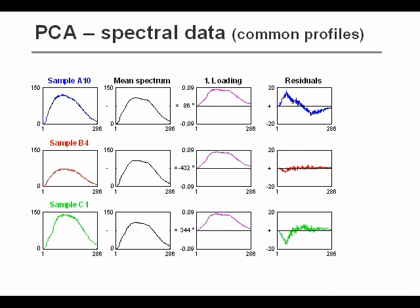Here we see the first component from PCA on the centered data. There are only three of all the different samples shown. The blue one on top, the red one in the middle, and the green one in the bottom. From each of those original spectra, we have subtracted the mean spectrum.